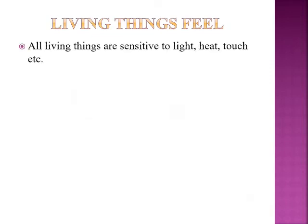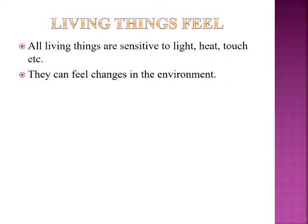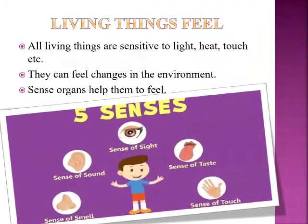The next feature is living things feel. All living things are sensitive to light, heat, touch, etc. They can feel changes in the environment. Sense organs help them to feel. We can feel these changes by our five sense organs: eyes help us to see, ears help us to hear, nose helps us to smell, tongue helps us to taste, and skin helps us to feel touch.